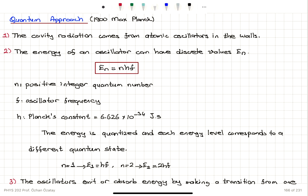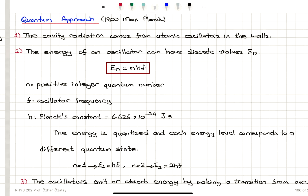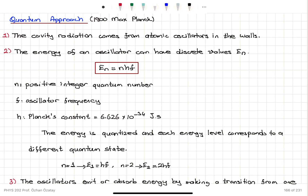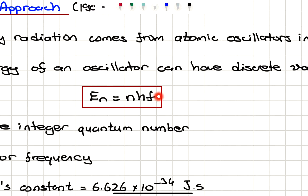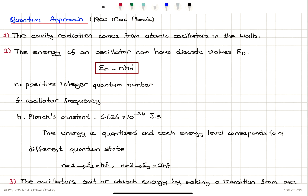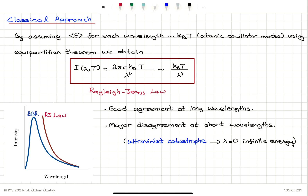Now we have the quantum approach, introduced in 1900 by Max Planck. The first point is that cavity radiation comes from atomic oscillators in the walls — the same assumption as before. However, the energy of an oscillator can only have discrete values: with quantum number n, the energy takes integer multiples of hf, Planck's constant times the frequency. Here n is a positive integer quantum number, f is the oscillator frequency, and Planck's constant h is 6.626 × 10⁻³⁴ joule-seconds. This is a major difference: in the classical approach energy can take any value, but in the quantum approach energy is quantized.